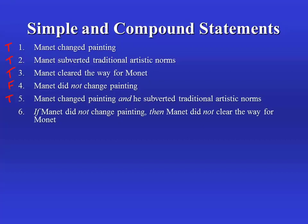Here, we take number one, negate it again, and number three and negate it, and then put that together in an if-then construction and we get the more complex: if Manet did not change painting, then Manet did not clear the way for Monet. As you can see, we can iterate this compounding process as much as we like to make more and more complex compound statements. We can also determine the truth value of six on the basis of the truth values of one and three. Since one is true, the part between the 'if' and the 'then' is false, and the part following the 'then' is also false since three is true. So, a false antecedent in an if-then will result in a true conditional. So for four, five, and six, we're able to determine the truth value of the complex whole just on the basis of the truth values of the components.